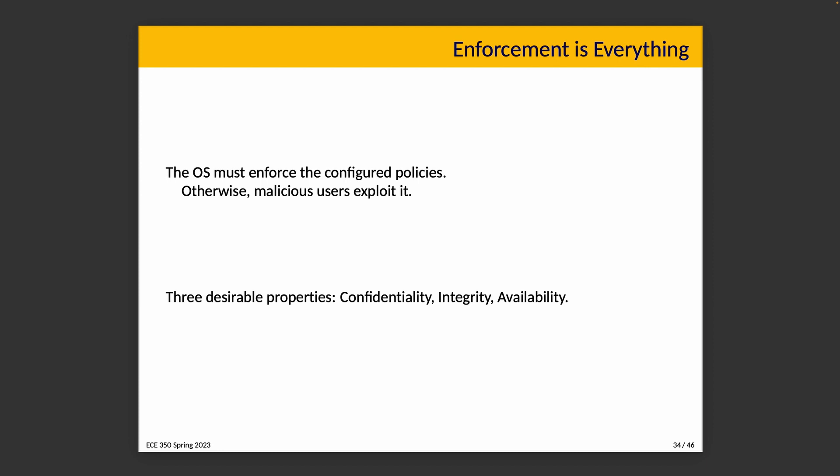If we do this well, we provide three desirable properties: confidentiality, integrity, and availability — it goes by the acronym CIA, with no particular relation to any government agencies using a similar acronym. Operating systems that don't achieve this will inevitably be exploited by malicious users and people just won't want to use them anymore. If a product gets a bad reputation for security, people will want to switch to a more secure alternative. Confidentiality means information should only be accessed by those who are authorized to see it. Integrity means information should be consistent and correct. Availability means information or services should be available when they are needed.